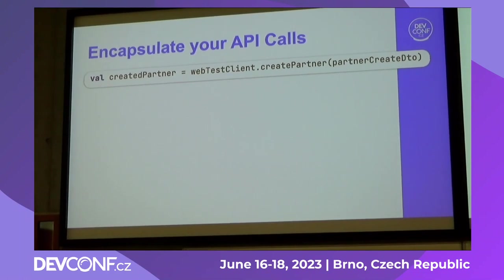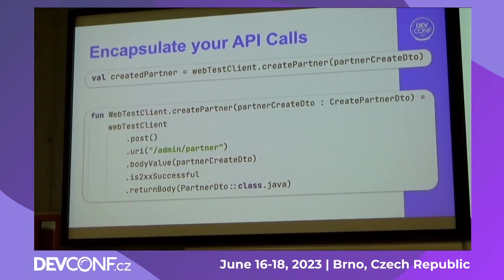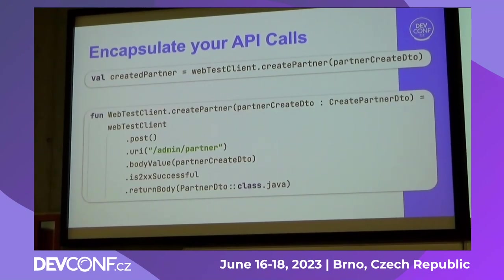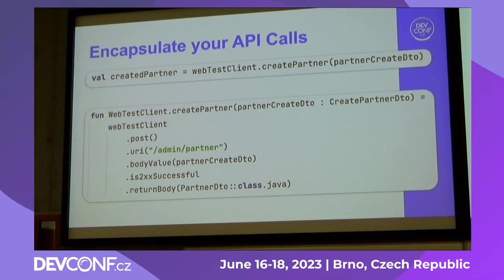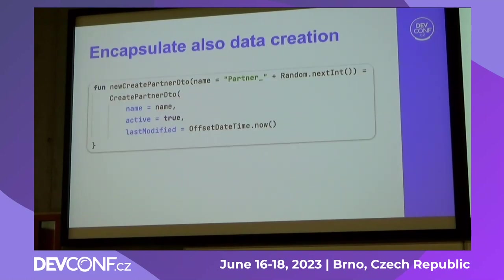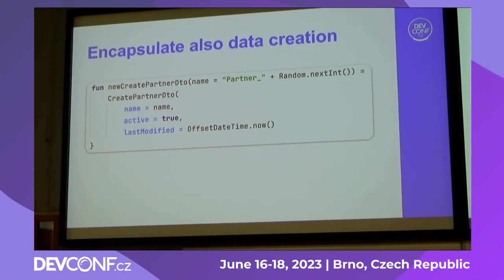Like this extension method creates some partner, gets some data, calls the URL, passes some value, and returns the body into the partner DTO. If I do that, my tests are short and this code is reusable — but it takes time, of course. And I also encapsulate data creation, so I can have some method for that and use defaults and rewrite only what's needed.